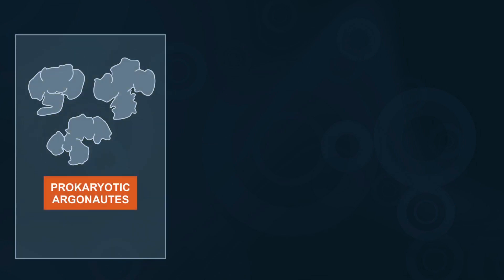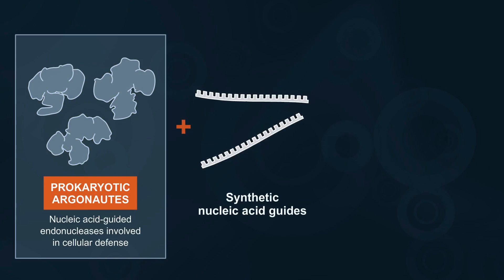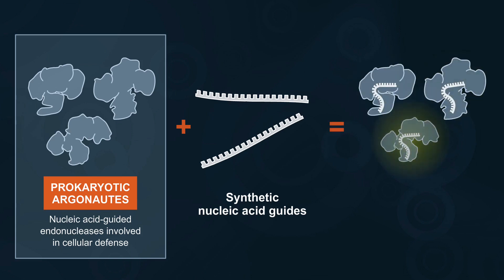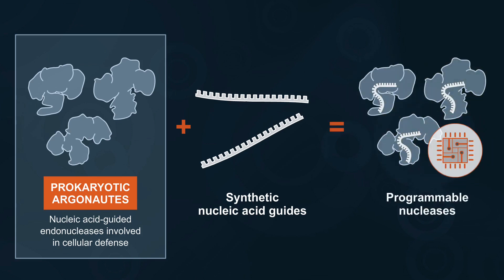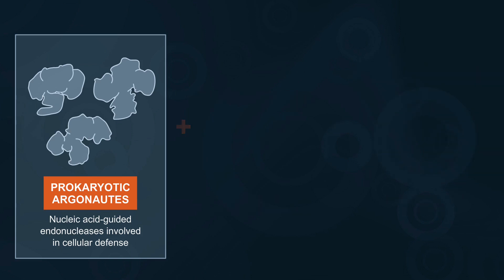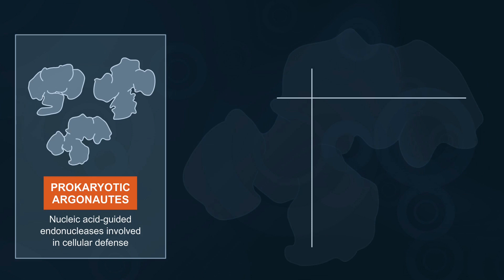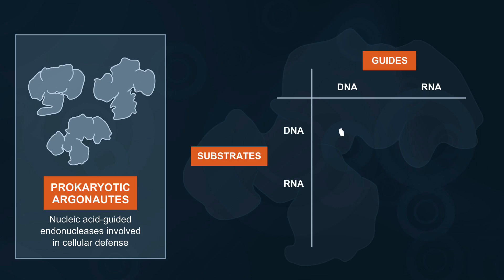Prokaryotic argonauts are nucleic acid-guided endonucleases involved in prokaryotic cellular defense against foreign genetic elements. When provided with synthetic nucleic acid guides, prokaryotic argonauts can be used as programmable nucleases. Argonauts from different prokaryotic species may utilize either DNA or RNA guides to target DNA or RNA substrates, leading to many potential combinations of guide and substrate preferences.